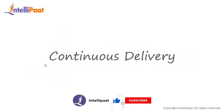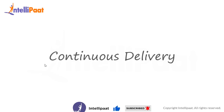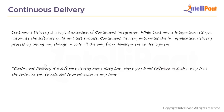Let us move on to continuous delivery — the CD part of the CI/CD pipeline. Continuous delivery is a logical extension of continuous integration. While CI lets you automate the software build and test processes, continuous delivery automates the full application delivery process — taking any change in code, including new features and bug fixes, all the way from development (code commit) to deployment to environments such as staging and production. It ensures you can release new changes to customers quickly in a reliable and repeatable manner. According to Martin Fowler, who coined the term, continuous delivery is a software development discipline where you build software in such a way that it can be released to production at any time.